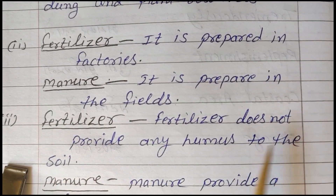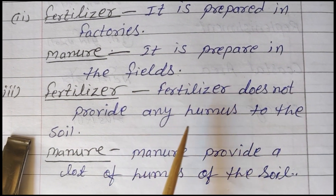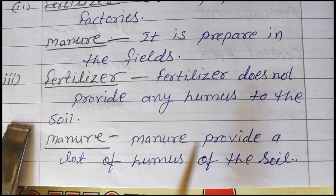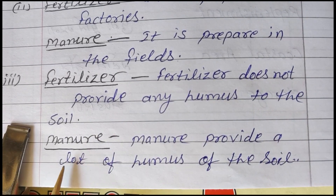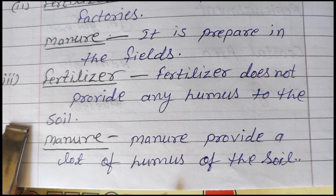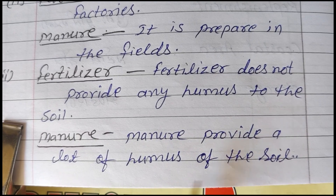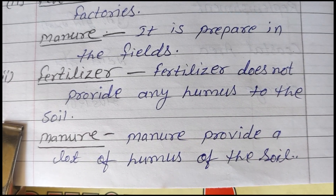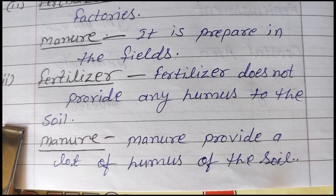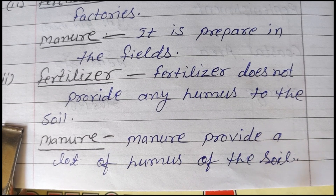Point 3 — Fertilizer: Fertilizer does not provide any humus to the soil. (Fertilizer jo hai, vo mitti ko kisi bhi prakar ka humus pradan nahin karta.) Manure: Manure provides a lot of humus to the soil, which is very useful for our crops. (Khad mitti ko bahut adhik matra mein humus pradan karta hai.)